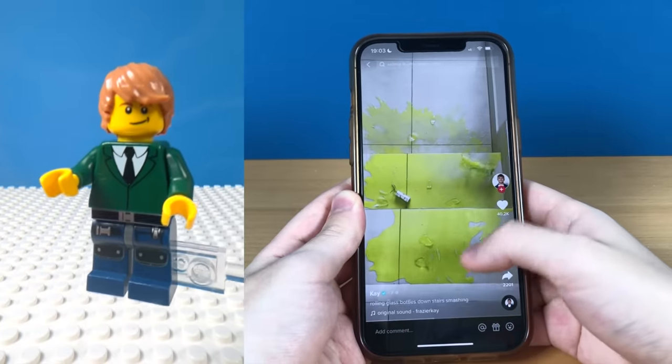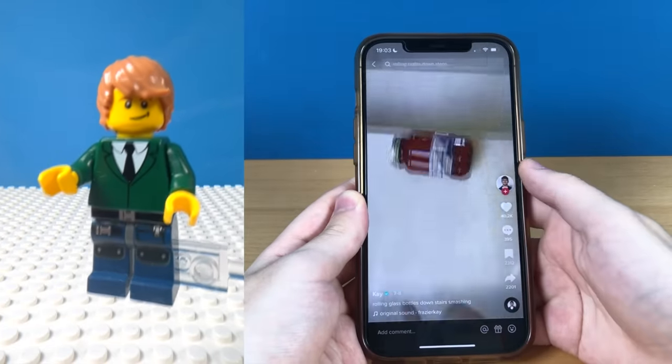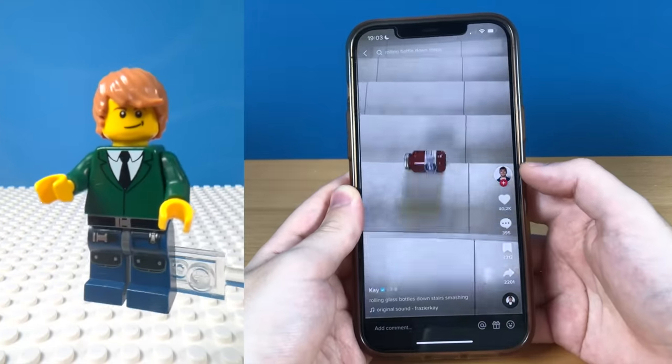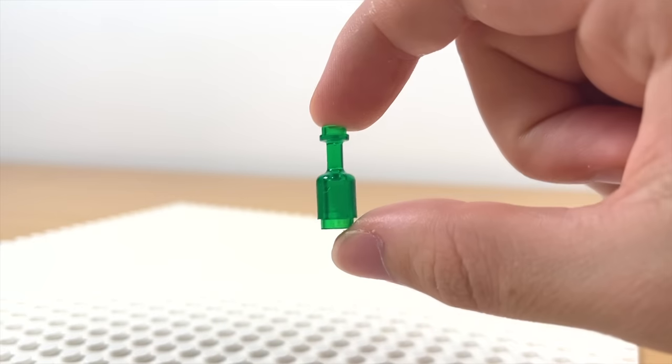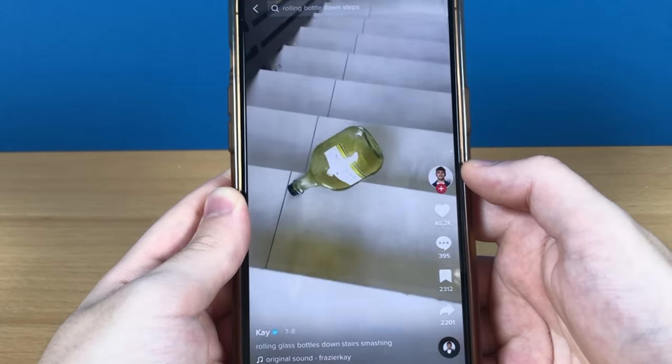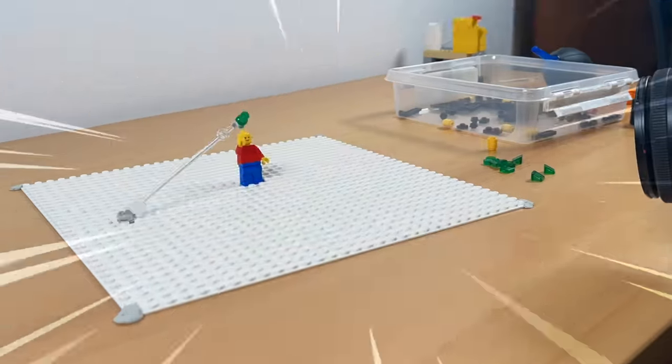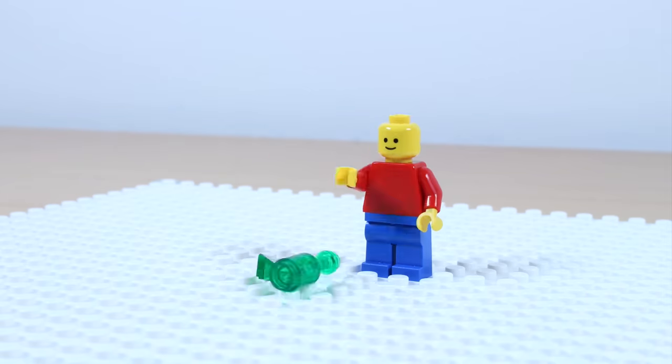I recently saw these videos of glass bottles rolling downstairs. The sound the bottles made was really satisfying and the end result of them breaking is just perfect. So I thought, why not try to recreate that with LEGO? I've got these LEGO glass bottles and to demonstrate how the animation of the glass breaking will look like, I animated the minifigure attempting a bottle flip and failing the bottle flip.